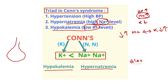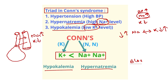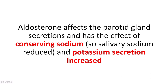Consider the duct of the parotid gland with a blood vessel going inside. The blood takes more sodium and excretes potassium, so in the blood sodium increases and potassium decreases. But in the duct of the parotid gland, as sodium moves to the blood, sodium level in the duct decreases, and potassium is excreted into the duct — so potassium level in the duct increases. This is the normal pathway of aldosterone activity in Conn's syndrome.